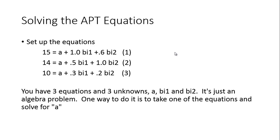What you have here is three equations and three unknowns. The three unknowns would be A, BI1, and BI2. So it's really just an algebra problem. We want to solve for this. If we have three equations and three unknowns, we know from algebra we can solve this. While there are several ways to do it, probably the easiest way is just to do some substitution.